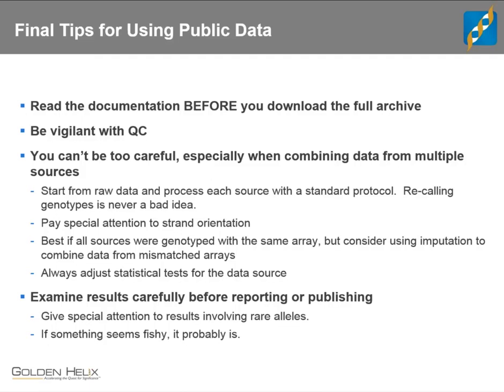Examine results before reporting or publishing. If you have a significant signal, go back and take a close look at the raw data and make sure it all makes sense. If something seems out of place, it probably is. Give special attention to results involving rare alleles — that example with the extreme QQ plot had most of the noise coming from SNPs with low frequency around 5% or less. In my experience, that's where most batch effect problems come from.